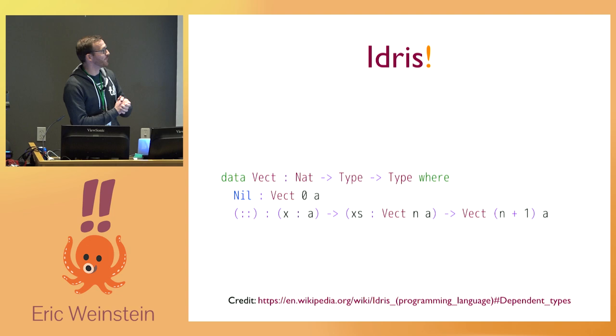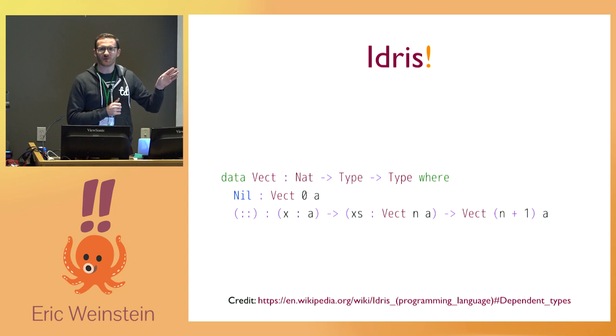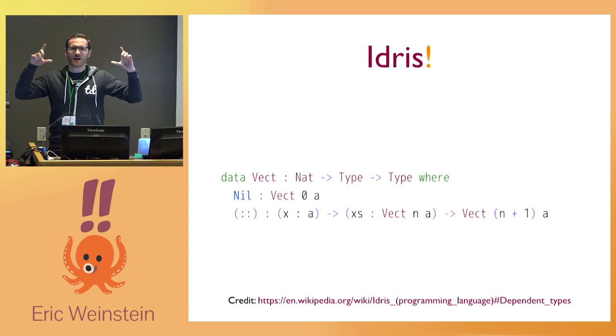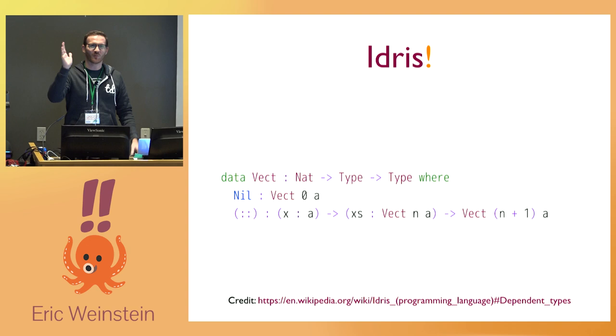If you're familiar with Haskell, this will look relatively straightforward; if not, that's okay. There's a funny thing on Twitter where someone replaced all the Latin characters in Haskell type signatures with hieroglyphics — little birds and rivers — and people found them equally confusing. I thought it was kind of interesting that you could translate them into hieroglyphics and people would still be just as lost.